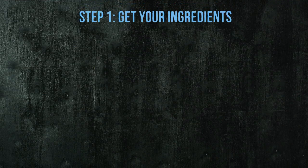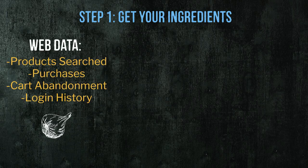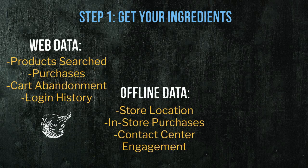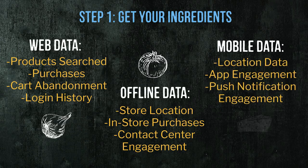The first step is to collect multi-channel data like web data, including products your customer has searched or purchases they've made. Offline data, like what store locations they prefer or in-store purchases they've made. And mobile data, like their location or the type of engagement they've had with your mobile app.